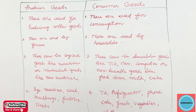The first point: producer goods. What are producer goods? These are used for producing other goods. Machines are used to produce other goods. Raw materials — from coal we generate electricity, from wheat we produce bread. So those are producer goods.